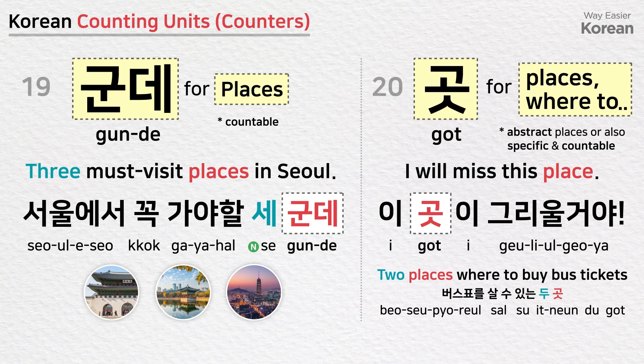곳 is a counting unit for places and describes a place where. This word is used for both abstract places and specific places. For example: I will miss this place — 이곳이 그리울 거야. Two places where to buy bus tickets — 버스표를 살 수 있는 두 곳.